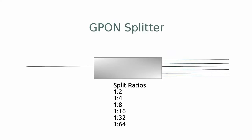I don't have a splitter to show you, but it's actually very small — I would liken it to a pack of fuses. There's a single fiber going in and a bunch of fibers coming out the other side. The number of fibers coming out depends on the split ratio, which goes up to a 1-to-64 split. The splitter sends the same light to all the fibers, which means some light is lost in the splitting process — what we call losses.